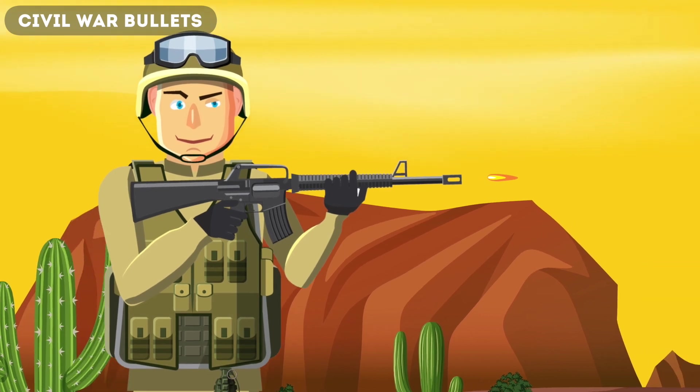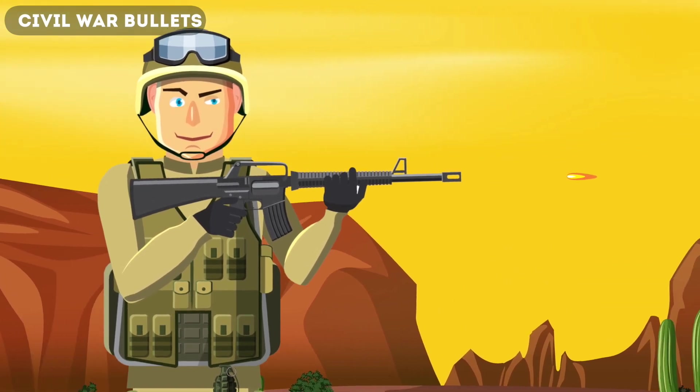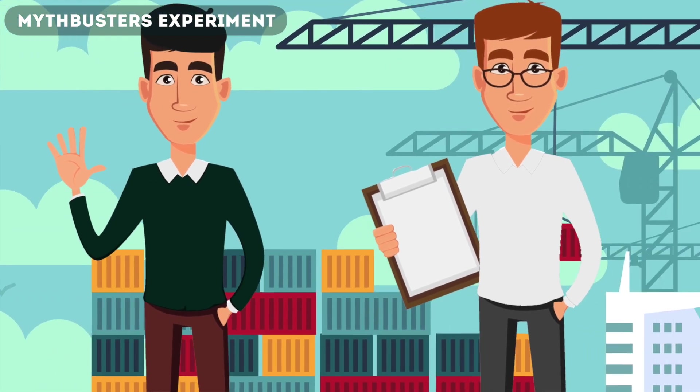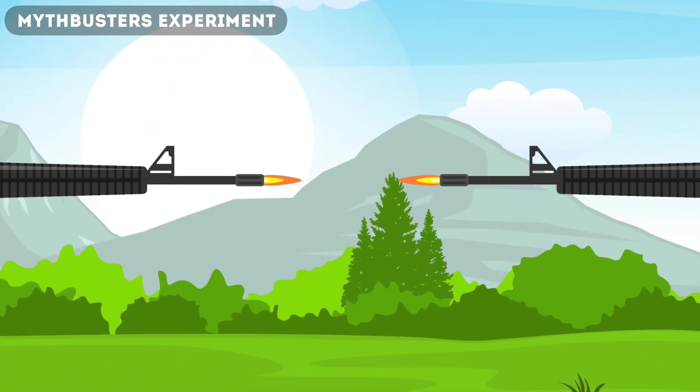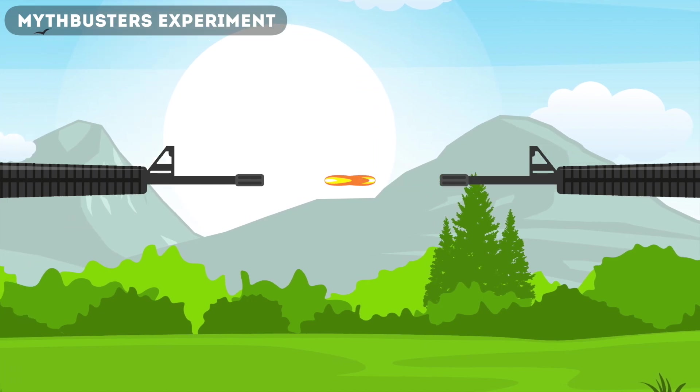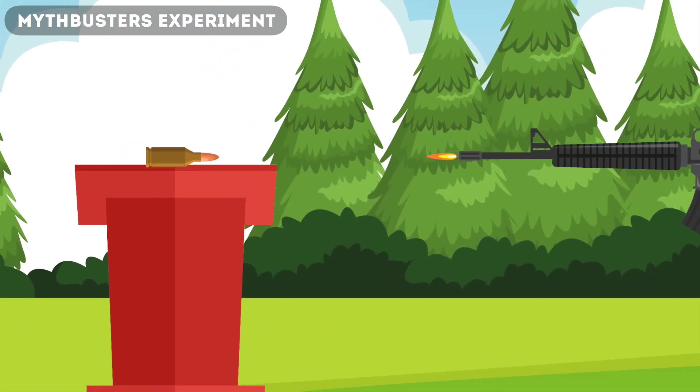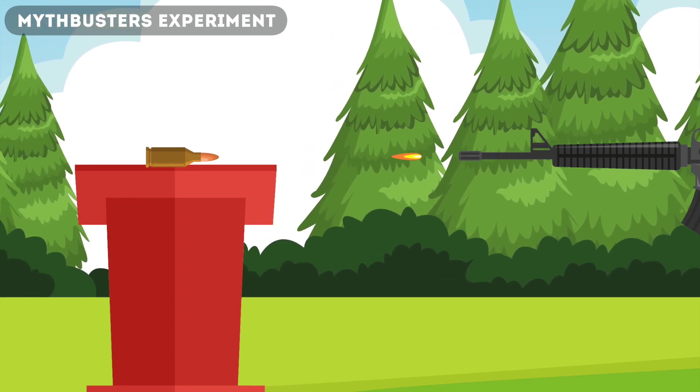But what about in modern times using modern bullets? What would happen? Well, Mythbusters actually did an experiment all about this. At first they tried to fire two rifles at each other, however this was impossible as they couldn't get them to fire at the same time. So instead they suspended a bullet in midair, then aimed a single rifle and fired.